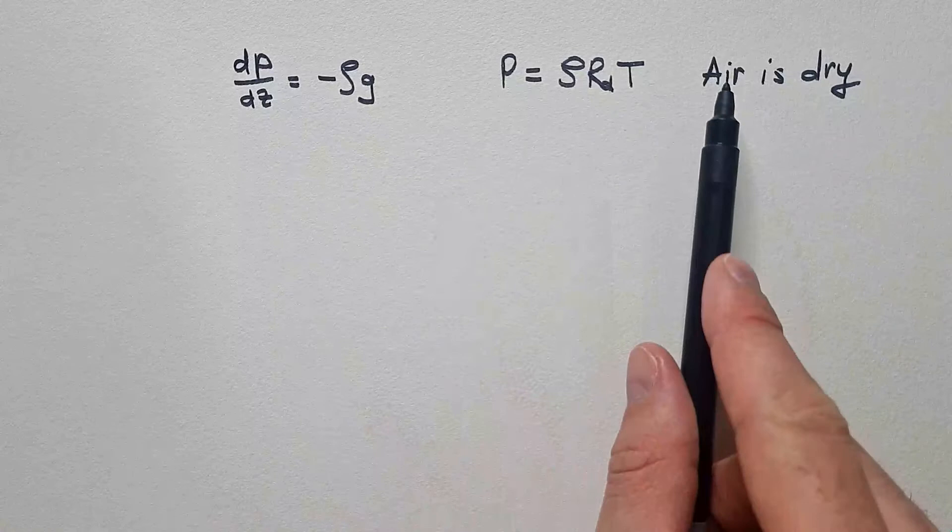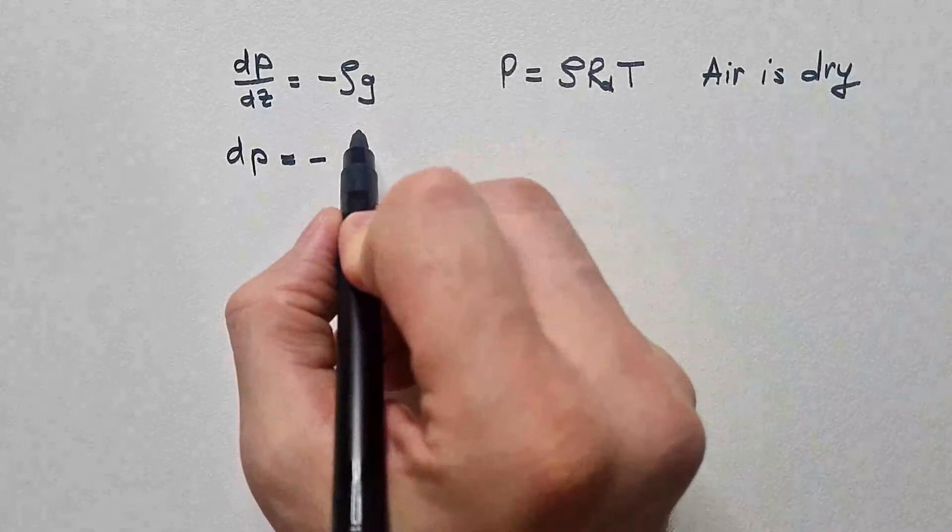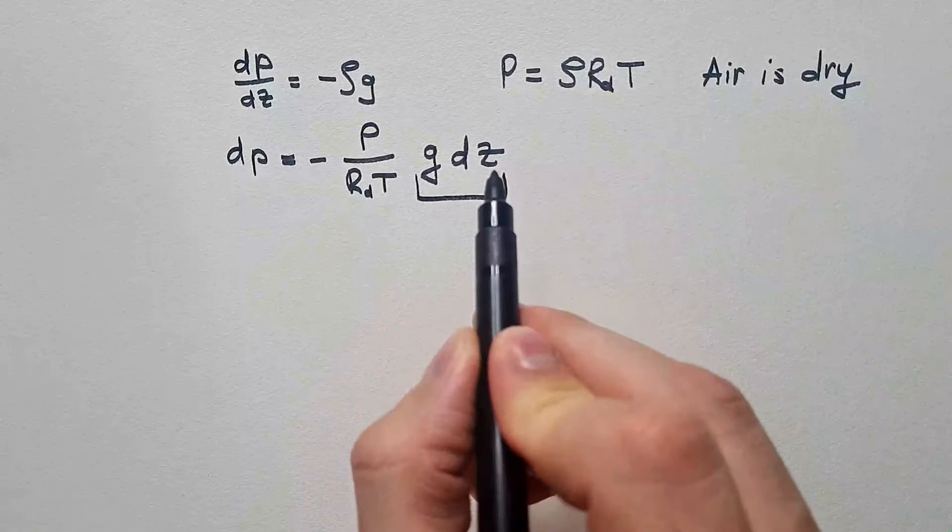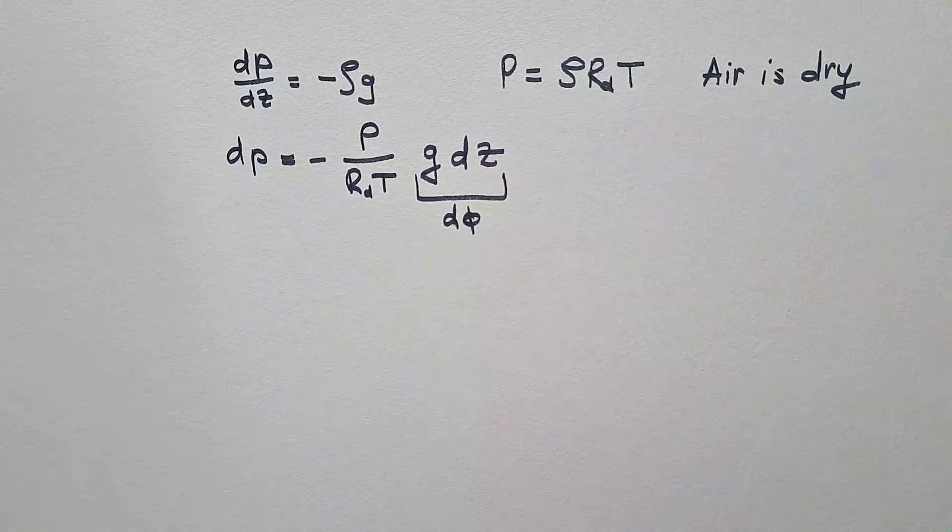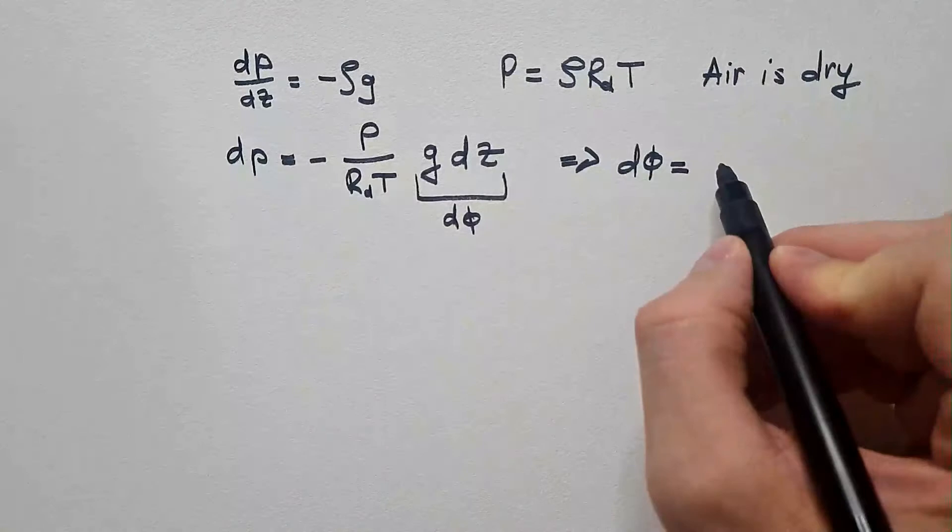Expressing rho and substituting here, we get that dP is minus P over RdT times GdZ. But notice that GdZ is actually geopotential that we defined in previous videos, dphi. Which means that dphi is equal minus RdT dp over p.